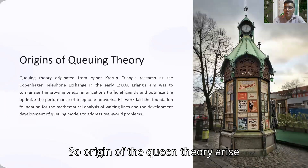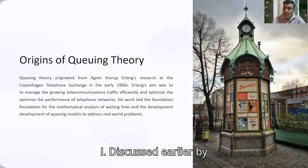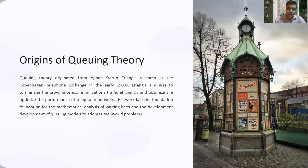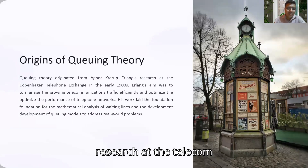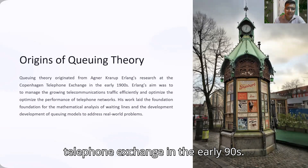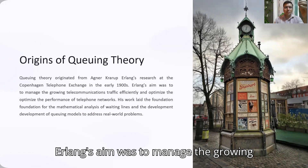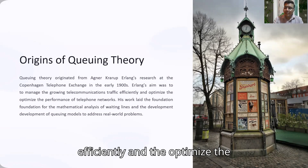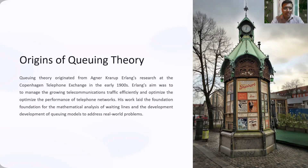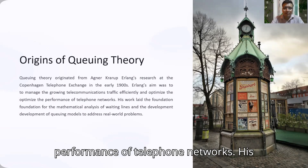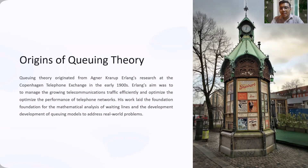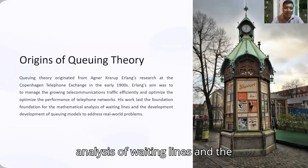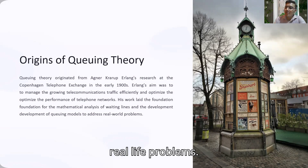The origin of queuing theory arose from Erlang's research at the telephone exchange in the early 1900s. His aim was to manage the growing communications traffic efficiently and optimize the performance of telephone networks. This work led to the foundation of the mathematical analysis of waiting lines and the development of current models to address real-life problems.